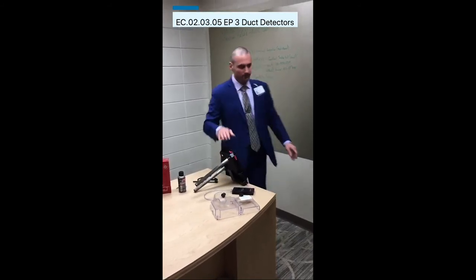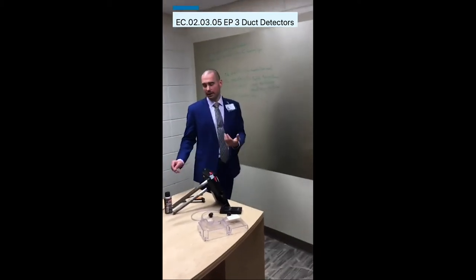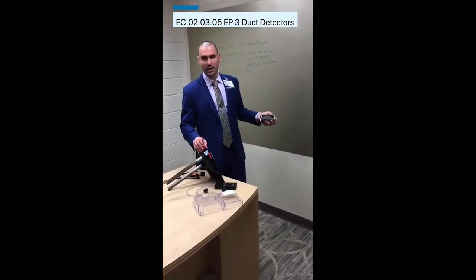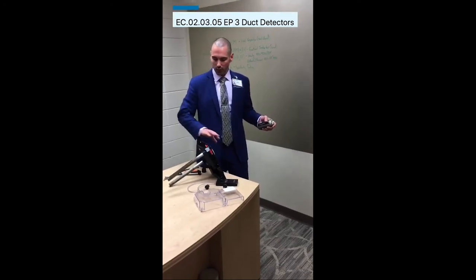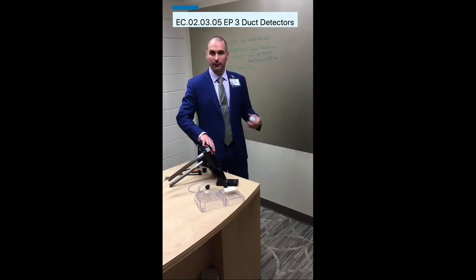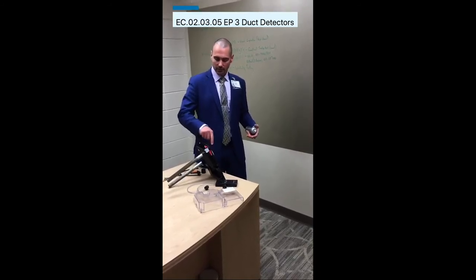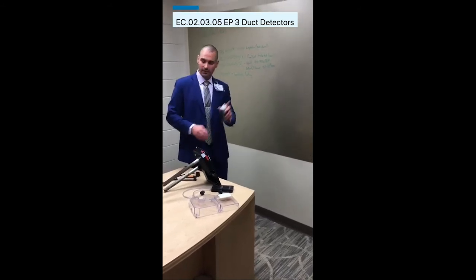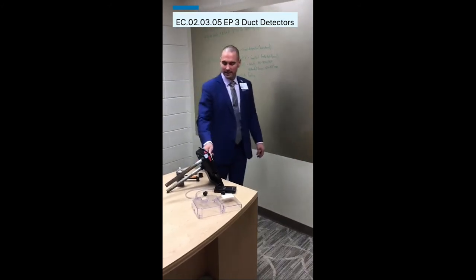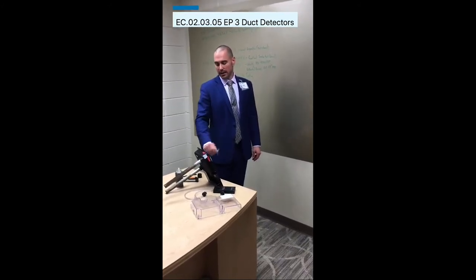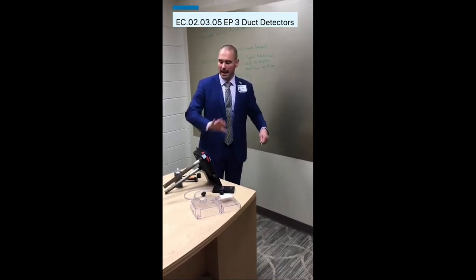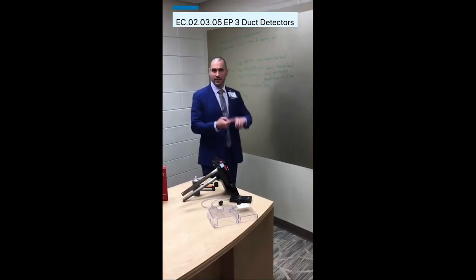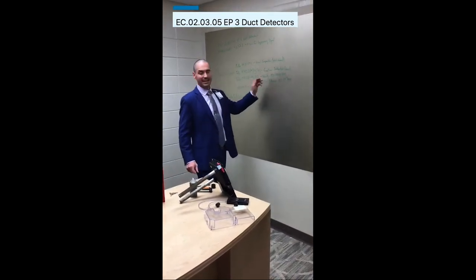Next is the functional smoke test — this is the test most companies get right. You take a can of smoke; newer duct detectors have test ports, while older ones require removing the housing to spray smoke in. You're simply performing a functional test to confirm that smoke sets off the detector — this is not a sensitivity test. If you ever see someone testing a detector with a magnet, fire them on the spot. A magnet is not an approved testing method; it can only be used after all other tests are done to test the relay and emergency control functions.